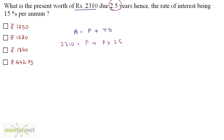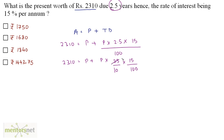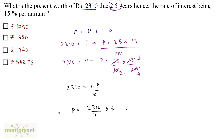So N is 2.5, written as 25 by 10, and R is 15 upon 100. This gives 2310 equals P plus P times 25/10 times 15/100, which simplifies to 8P plus 3P all over 8, that is 11P by 8. So P equals 2310 times 8 divided by 11. 2310 divided by 11 is 210, times 8 equals 1680. The answer is option B, rupees 1680, which is the present worth.